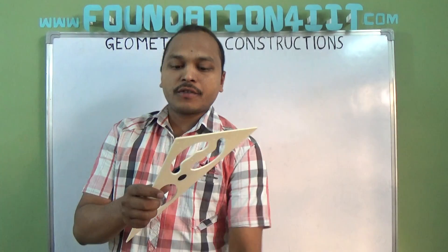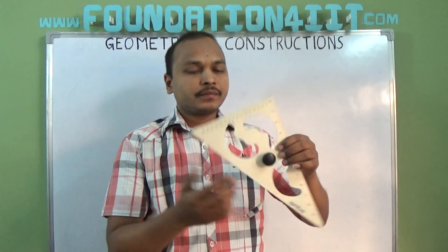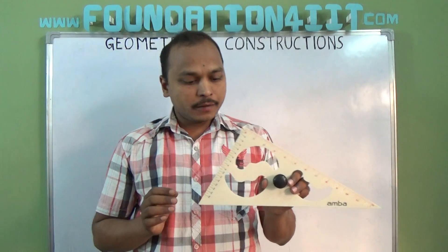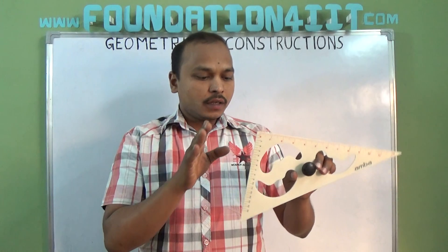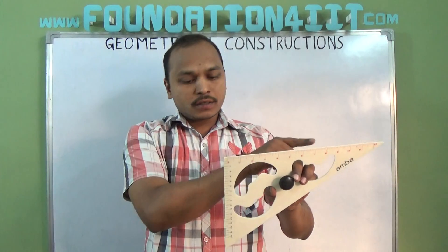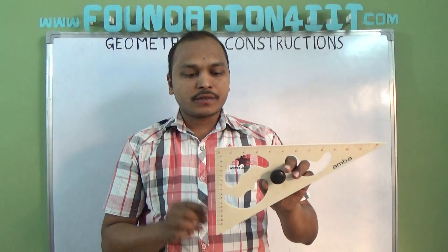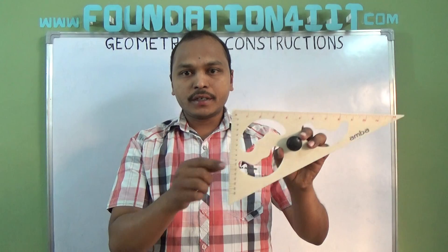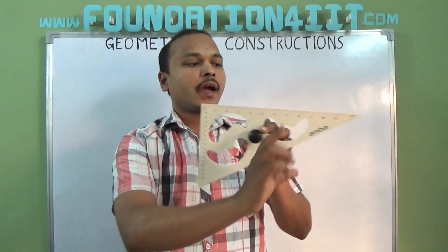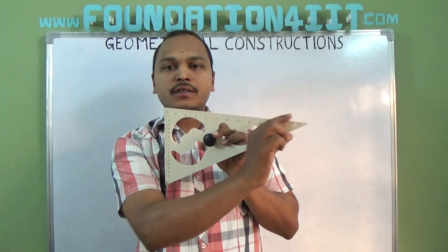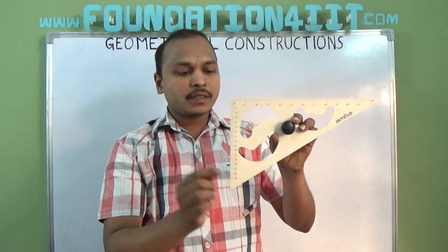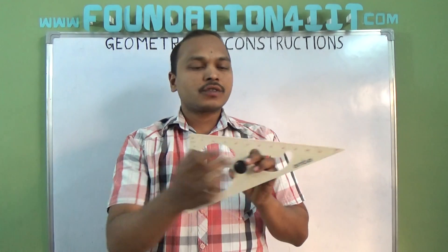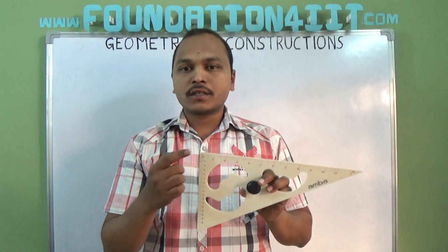This is the set square. This is called a 60-30-90 set square. This angle is 90 degrees, this edge is 30 degrees, and this is 60 degrees — so this is a 30-60-90 set square.